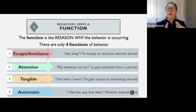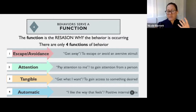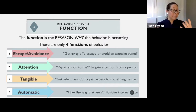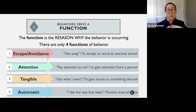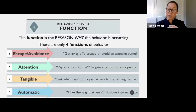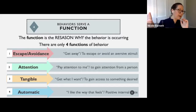Aversive stimuli is something they do not like, and they engage in a behavior to escape that thing or avoid it. The second function is attention — to gain attention from another person. I do something to get attention from mom, I do something to get attention from dad. Remember that all of these functions are applicable to both maladaptive and adaptive behavior, so there are appropriate and inappropriate ways to gain attention.